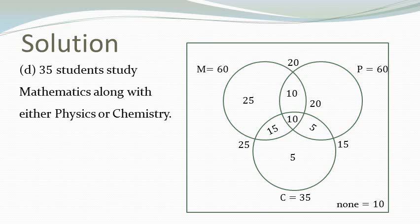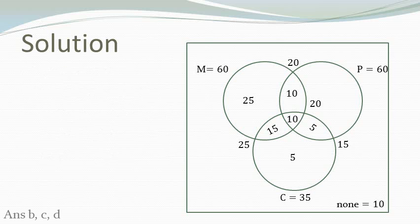The last option says that 35 students study math along with either physics or chemistry. Now looking at the Venn diagram it's clear that this is the number. So 10 plus 10 plus 15 and that adds up to 35. So this one is true. Therefore the correct answers can now be written down and they are B, C and D.